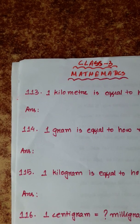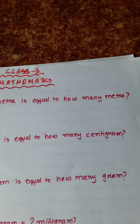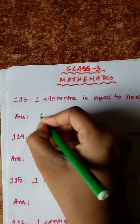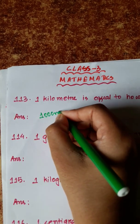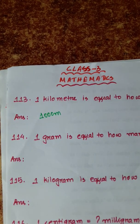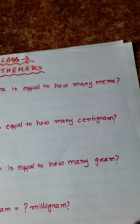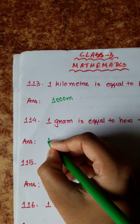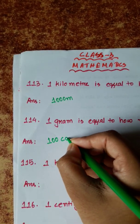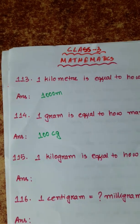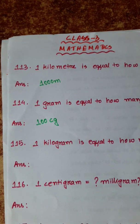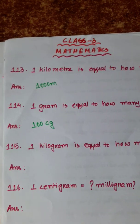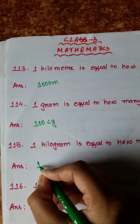Number 113: 1 kilometer is equal to how many meters? 1 kilometer is equal to 1000 meters. Number 114: 1 gram is equal to how many centigrams? 1 gram is equal to 100 centigrams. Number 115: 1 kilogram is equal to how many grams? 1 kilogram is equal to 1000 grams.